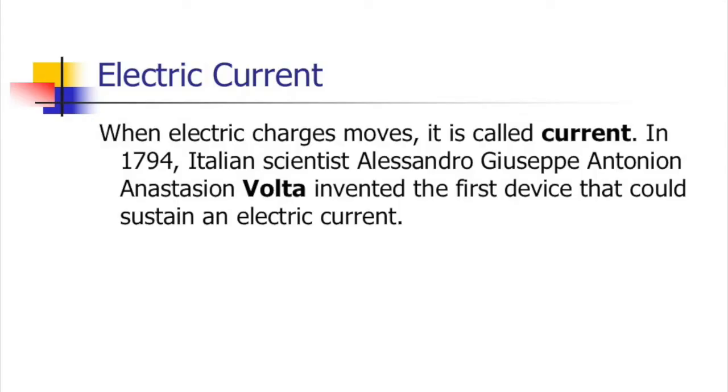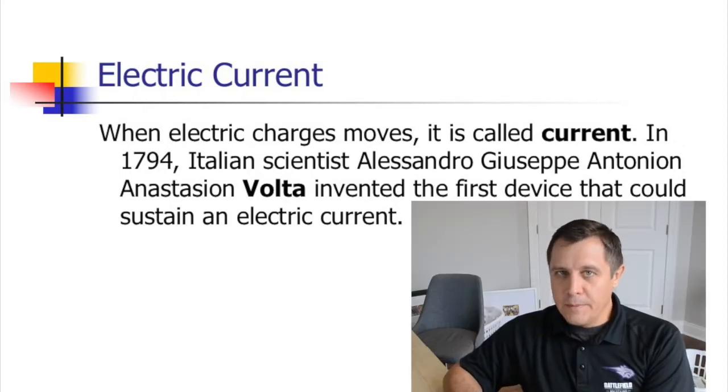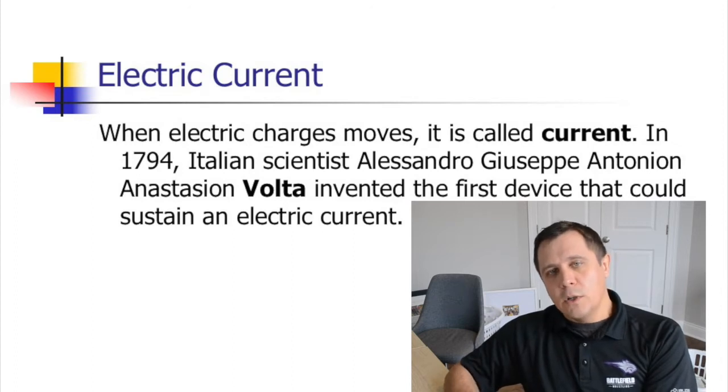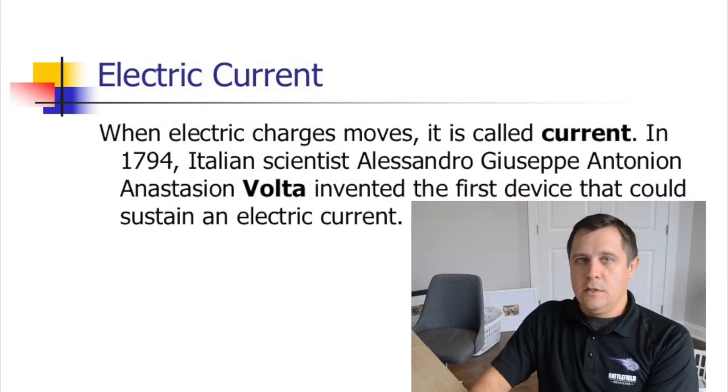Before 1794, the only real electricity you knew about was static electricity — obviously lightning, or like a party trick where you'd have things spinning and you could get a shock and show a spark. But 1794 was when the Italian scientist Alessandro Volta created the first battery, which allowed a constant flow of electricity.